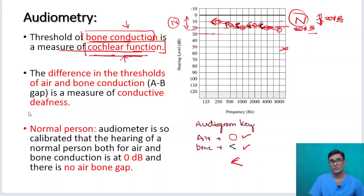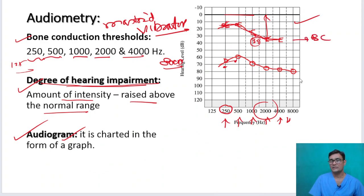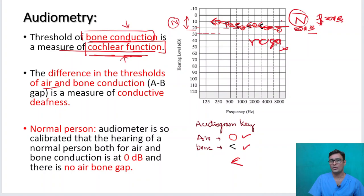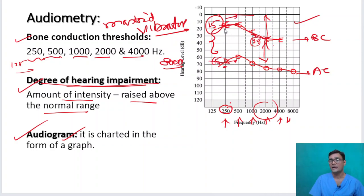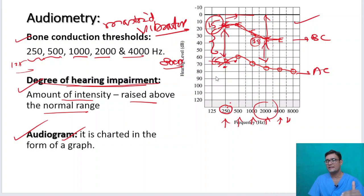In a normal person there is no air bone gap. But in a patient with conductive deafness, there is an air bone gap. For example, at the same frequency, bone conduction is at 15 decibels but air conduction has come down to 65 decibels — that gap is the air bone gap. This means his cochlear function is normal but his air conduction pathway has been seriously affected.